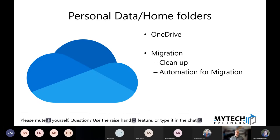For personal data and home folders, the perfect place to move this is OneDrive — that's really what that data is meant for. OneDrive is your personal storage point. The best way to do this is through an automated migration — pick up data from computers, shared drives on the server, whatever it might be, and dump it into OneDrive. Before you spend time uploading all of it, it's worth having a spring cleaning party and asking everybody to clean up their home folders first.